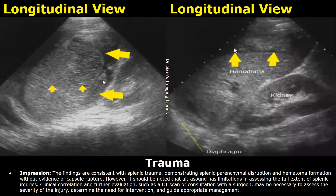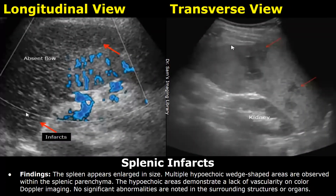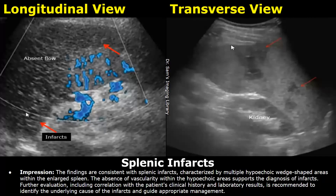Here is a case of splenic infarcts. In the findings, multiple hypoechoic wedge-shaped areas are seen. The hypoechoic areas demonstrate a lack of vascularity on color Doppler imaging. In the impression, you can mention the multiple hypoechoic wedge-shaped areas as well as absence of vascularity within the hypoechoic areas, which support the diagnosis of infarcts, and then you can write about clinical correlation.